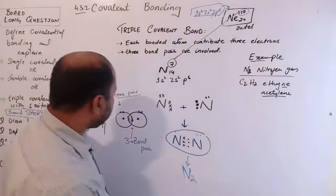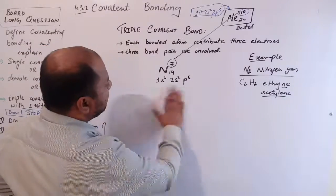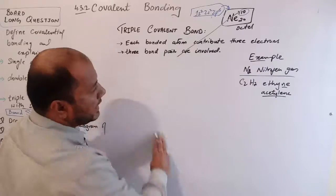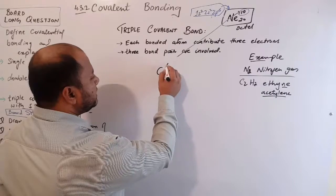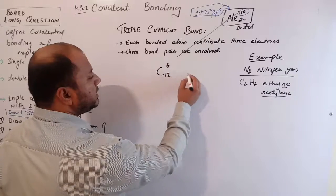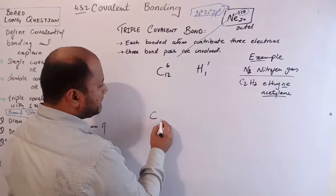Now let's talk about acetylene or ethyne formation. Carbon is the sixth element of the periodic table and hydrogen is the first element of the periodic table.